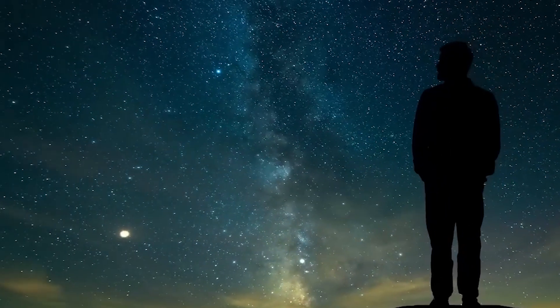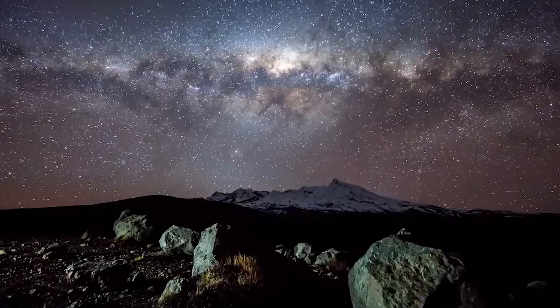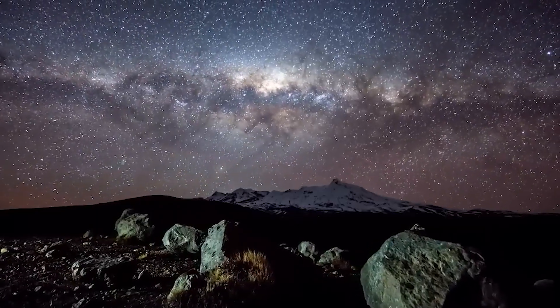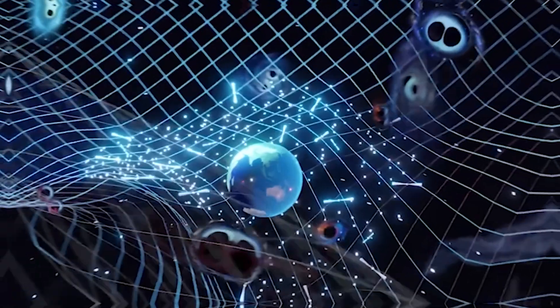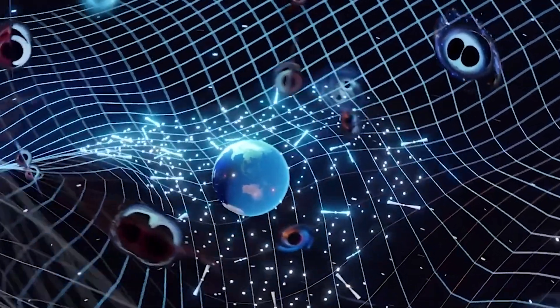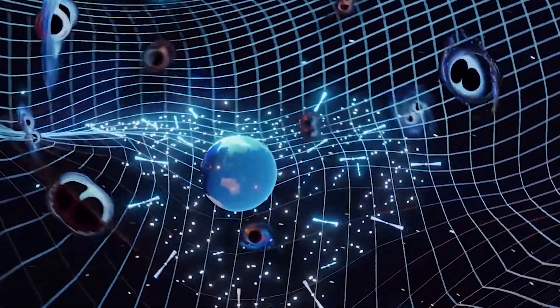Galaxies will drift further apart, and stars will dim as they run out of energy and matter to keep forming and changing. Eventually, the universe will be dark and empty, without stars, planets, or anything else.